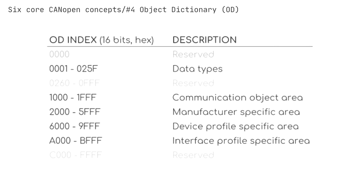We recommend checking out the CiA 306 standard to gain a deeper understanding of the OD, EDS, and DCF with practical examples. The DCF is typically created upon device integration. However, often it will be necessary to read and or change the object values of a node after initial configuration. This is where the SDO service comes into play. The SDO service allows a CANopen node to read or edit values of another node's object dictionary over the CAN network.